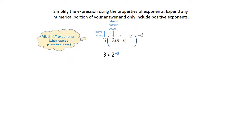The m to the 4th and n to the negative 2 are going to be multiplied with the negative 3 on the outside. So you're going to have m to the negative 12 and n to the positive 6.